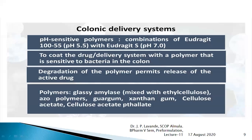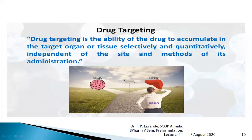Examples of polymers used in the colonic drug delivery system include glassy amylose mixed with ethyl cellulose, azopolymers containing nitrogen compounds, guar gum, xanthan gum, cellulose acetate, and cellulose acetate phthalate.